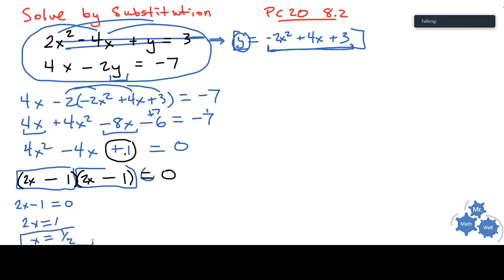So two x equals one x equals one half. Okay, so it looks like x equals one half here, in this system. And now I need to simply find y.